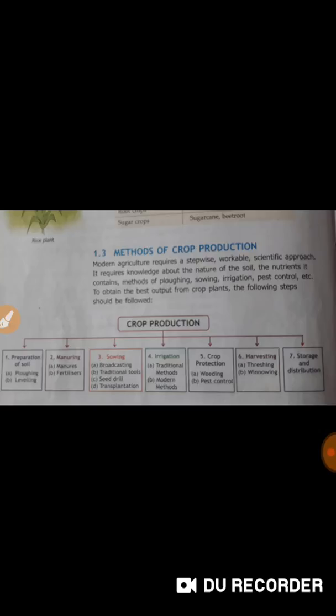Loosened soil helps in the growth of earthworms and microbes present in soil which increases the fertility of the soil. Then loose soil helps sunlight to reach the deeper layers of soil and kill harmful microbes.